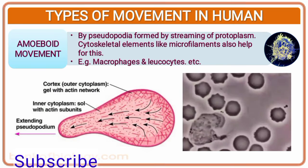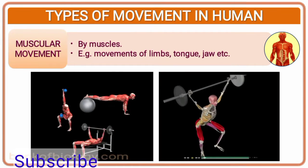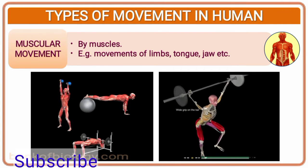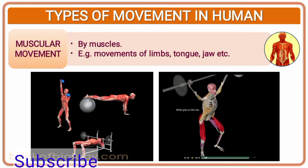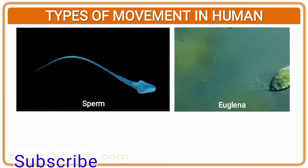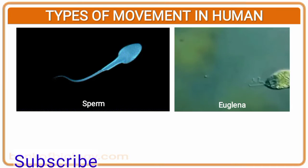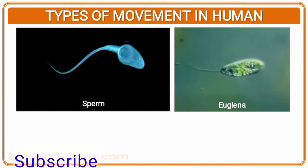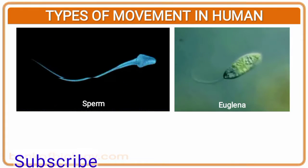These pseudopodia are formed as required by the animal. You can see here the movement of limbs of different body areas as humans are working out, so they have better developed muscles — these are the muscular movements. These are also examples of how sperm moves from the human copulatory organs to the female's oviduct, where fertilization takes place, and how euglena moves. You can see in the diagram also.